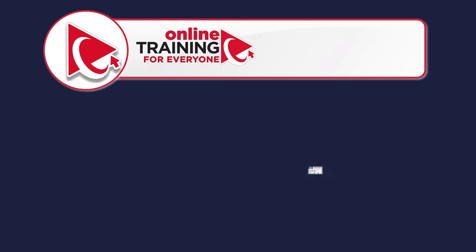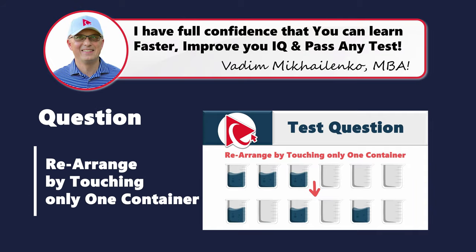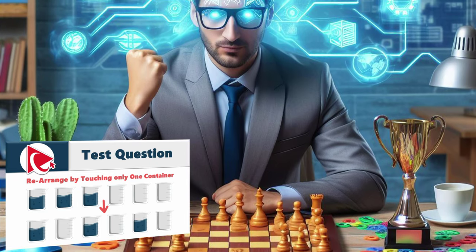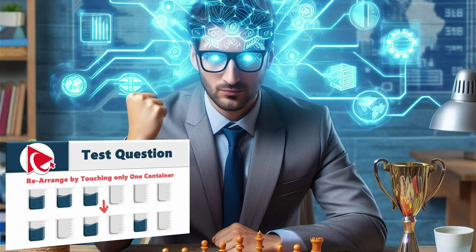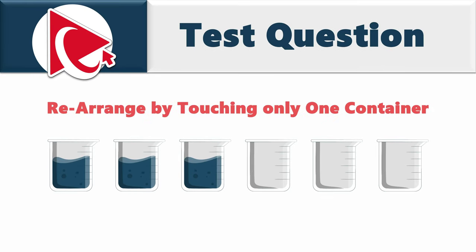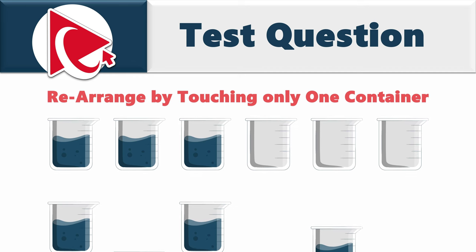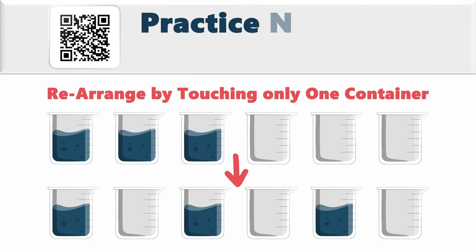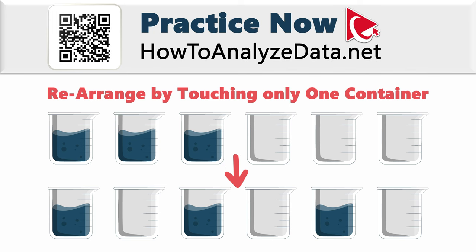We need to think of this as a friendly competition with ourselves — every correct answer is a personal victory. In this question, you're presented with six containers: three are filled with liquid, and you need to rearrange them by touching only one container. This question seems unsolvable, but I believe in your abilities. The answer is just waiting for your insightful touch.